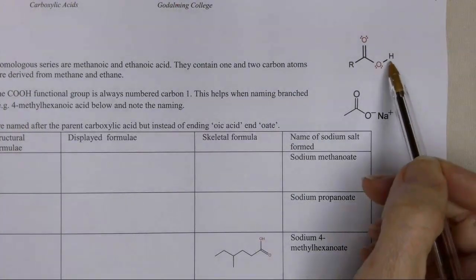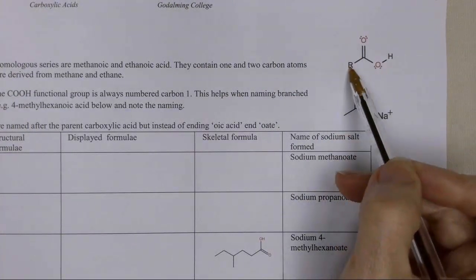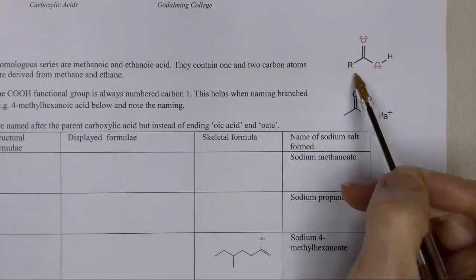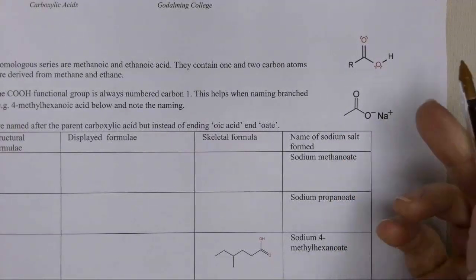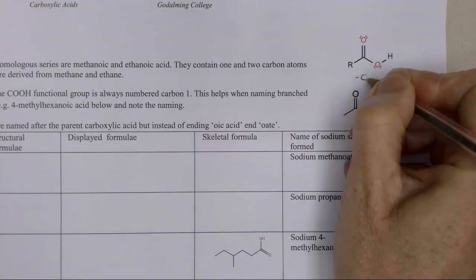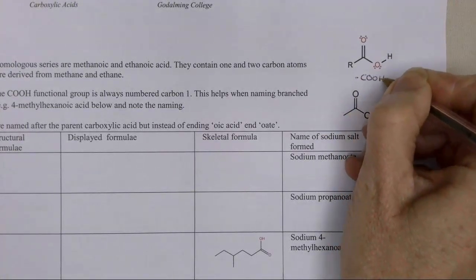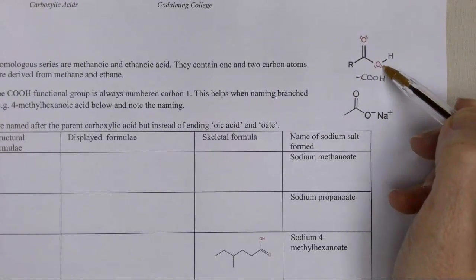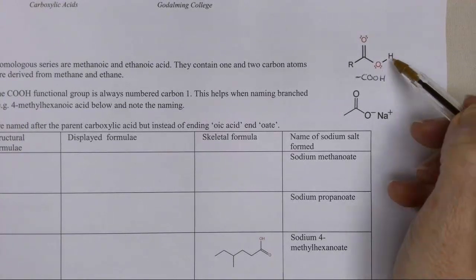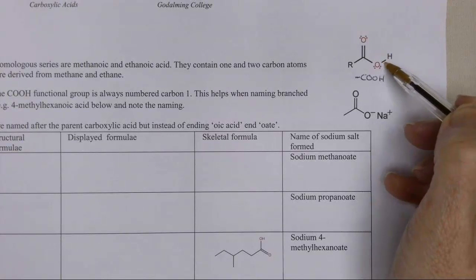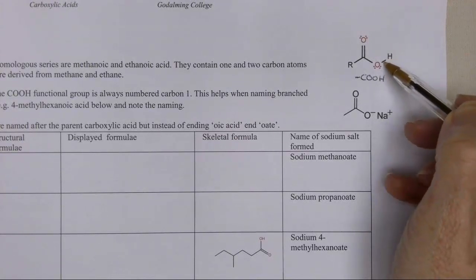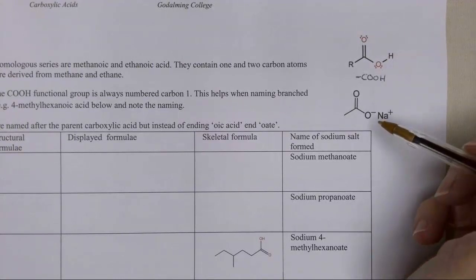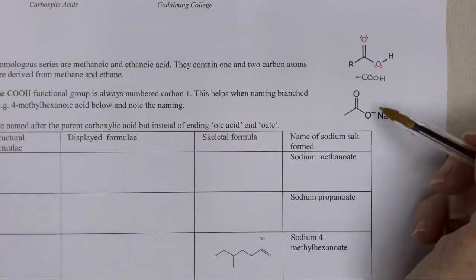Looking at page two of your notes, this is the functional group for a carboxylic acid. It's a COOH group, often written COOH. It has a carbon double bonded to oxygen, and it also has an OH group. It is a carboxylic acid, and the reason it's an acid is this hydrogen here can come off as an ion, so it produces hydrogen positive ions — that's what makes something an acid. We call it a proton donor.